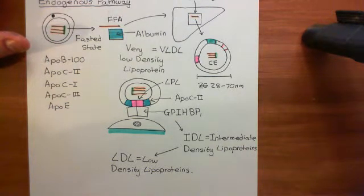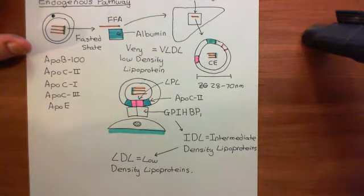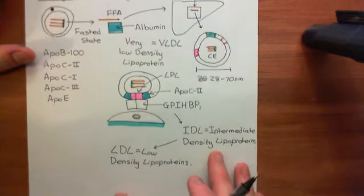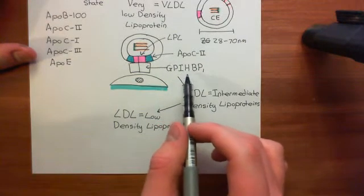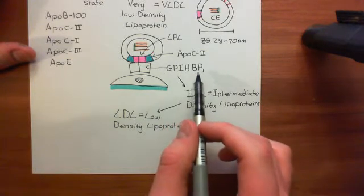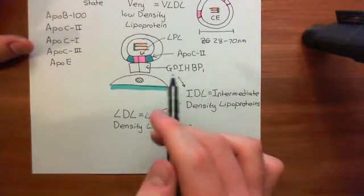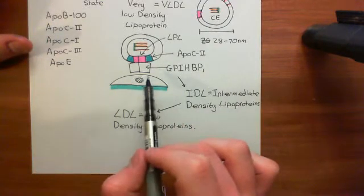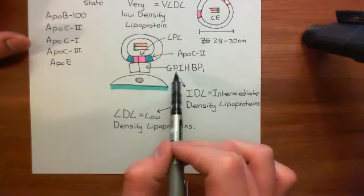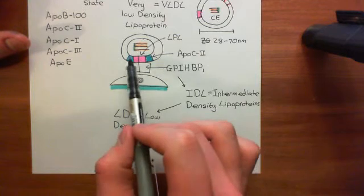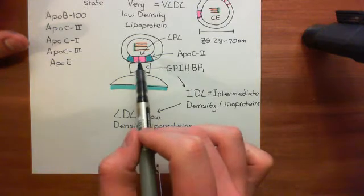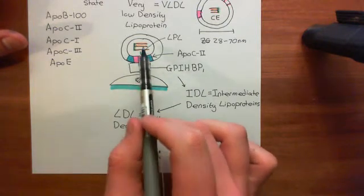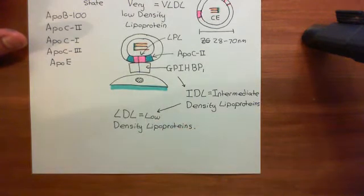They will go to capillaries within skeletal muscle tissue and within cardiac muscle tissue. In those capillaries, you have endothelial cells which have on their surface glycosylphosphatidylinositol high-density lipoprotein binding protein 1 molecules on their outer surface, latched there by glycosylphosphatidylinositol. These form dimers, and on top of the dimer you then have a homodimer of lipoprotein lipase, which is what you need to harness lipid molecules out of these very low-density lipoproteins.